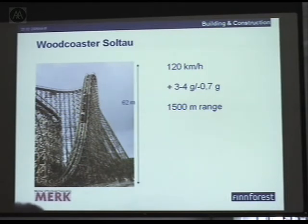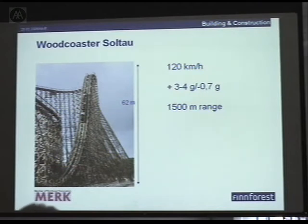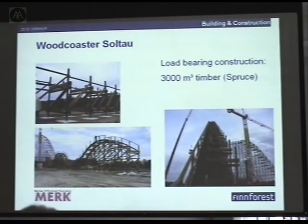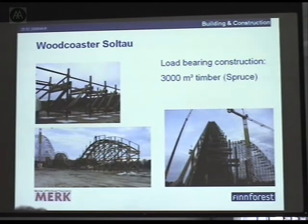Just to show you what is possible in timber today: if you want to go on a 62-meter-high wooden roller coaster, you can do it in Germany, near Hanover — at 120 kilometers per hour. I would not recommend doing it after breakfast. It's a quite famous timber structure, and it's not temporary — we expect it will be there for at least 25 years. All the timber is treated and impregnated. The double curved tracks were made out of Kerto LVL, treated by using this robotic machinery in the factory, which was again completely computer-aided designed and manufactured.